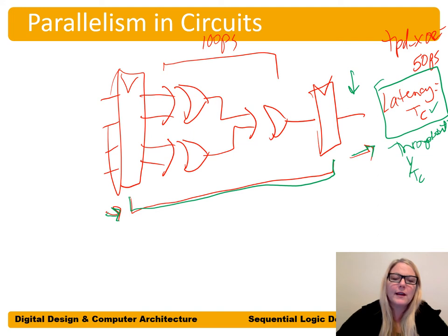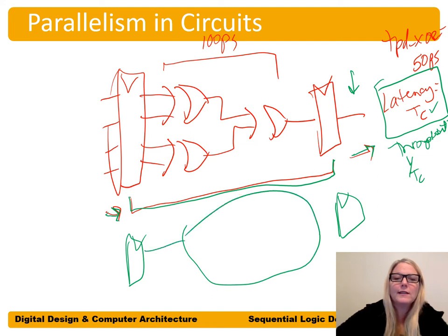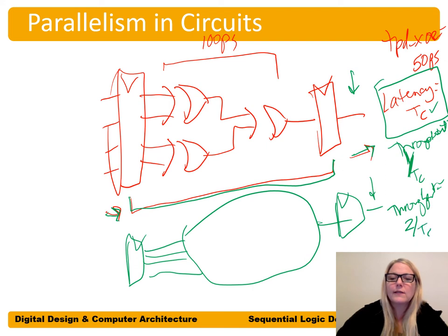With spatial parallelism in circuits, we put two of these circuits in parallel. The latency is still the same — it still takes the same amount of time to get outputs. But throughput is now two calculations per cycle time instead of one, so we've doubled the throughput of our system.